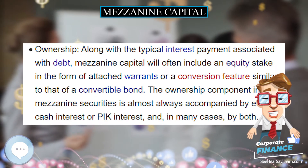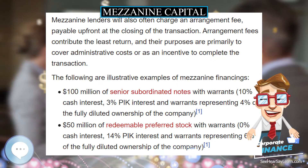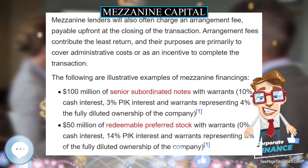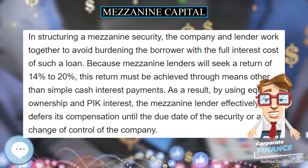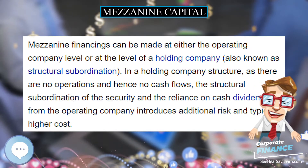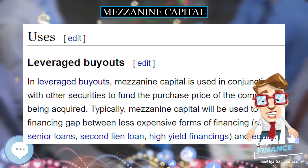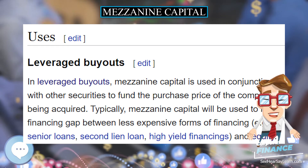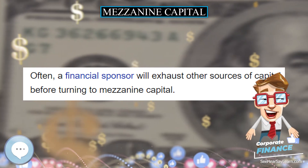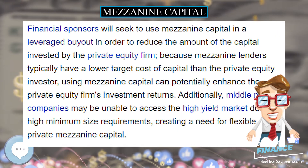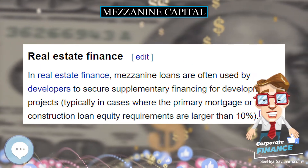Mezzanine lenders will also often charge an arrangement fee, payable upfront at the closing of the transaction. Arrangement fees contribute the least return, and their purposes are primarily to cover administrative costs or as an incentive to complete the transaction. In structuring a mezzanine security, the company and lender work together to avoid burdening the borrower with the full interest cost of such a loan. Because mezzanine lenders will seek a return of 14% to 20%, this return must be achieved through means other than simple cash interest payments.